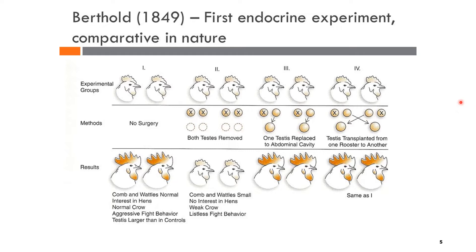In this experiment, Berthold surgically castrated six healthy roosters. He then divided the roosters into three groups of two roosters. Group one served as a control group where the testes of both roosters were removed. For the second group, the roosters had only one of the testicles removed.